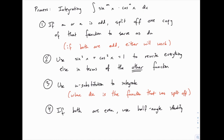That's the general process if one of them is odd. If both powers are even, that's when you use the half-angle identities. We'll see an example later on in another video where all powers are even and you use a half-angle identity. The process is very similar. It's the ones where one power is odd that you have to think about which way to make things work. All the powers of sine and cosine can be done according to this process.